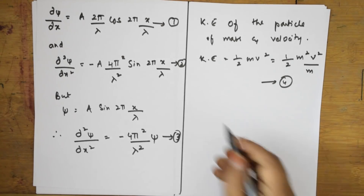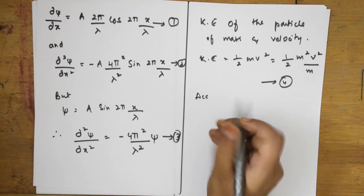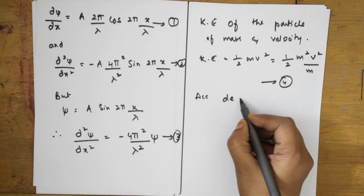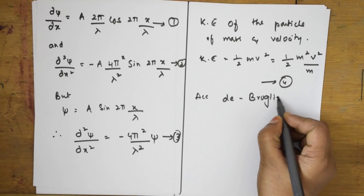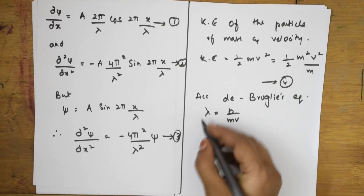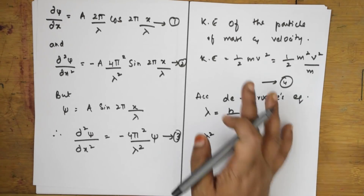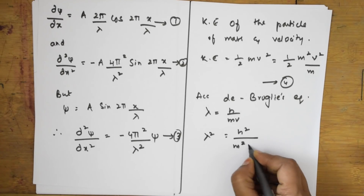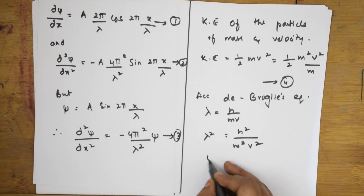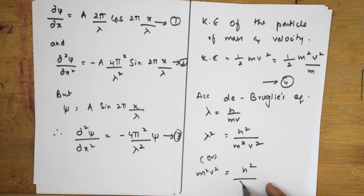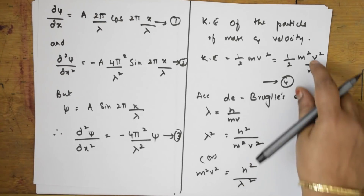Now Schrödinger relates the de Broglie equation to this. According to de Broglie, λ = h/mv. So λ² = h²/(m²v²), which means m²v² = h²/λ². Let us call this equation (M²).